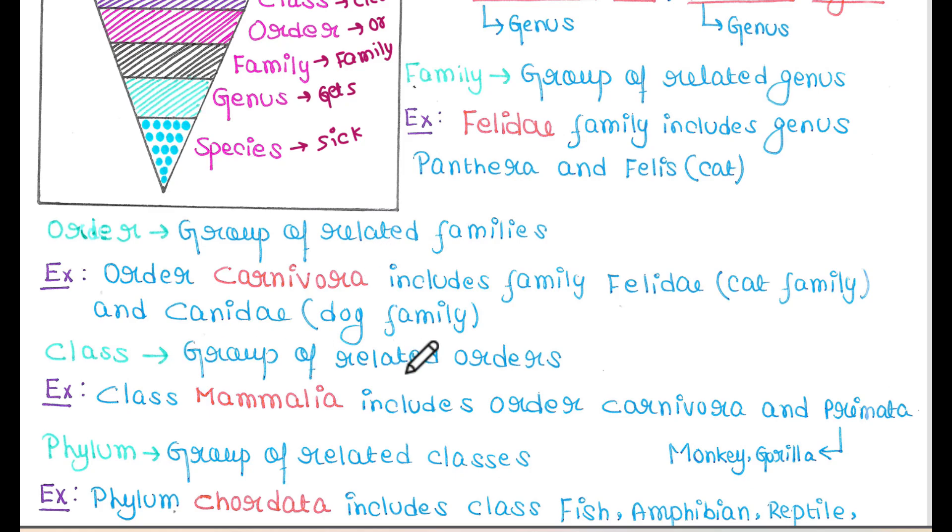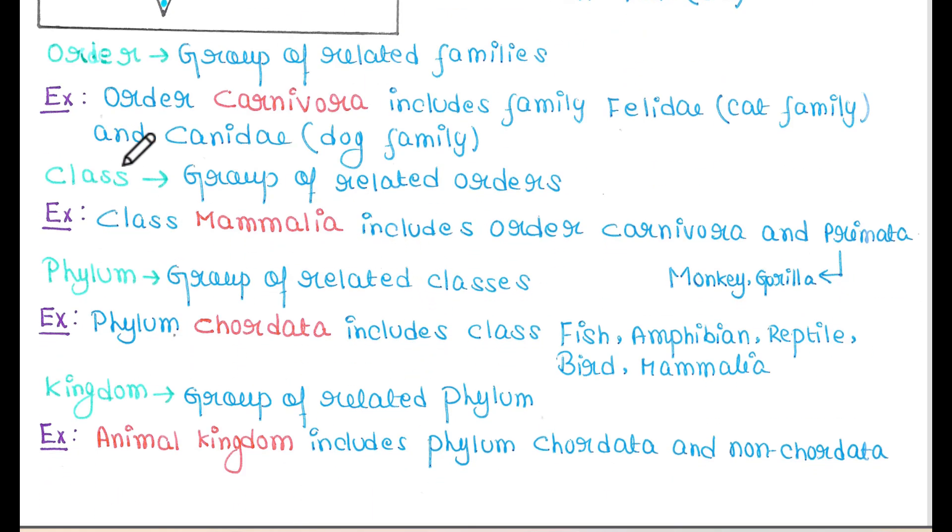Class - a group of related orders. Class Mammalia includes order Carnivora and Primata. Carnivora includes cats and dogs, and Primata includes monkeys, gorillas, etc.